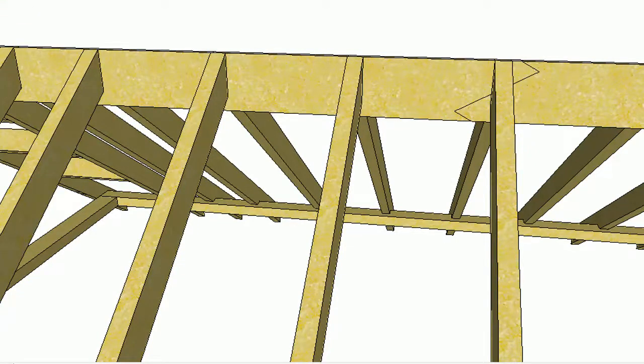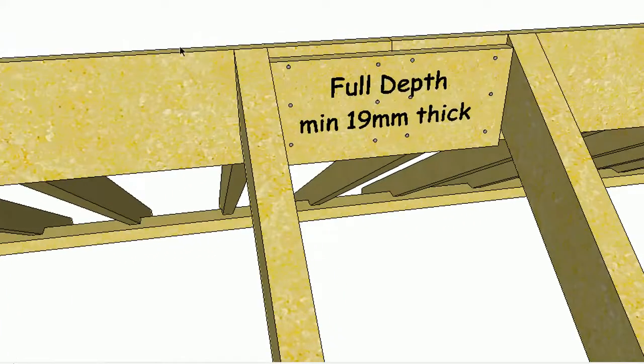The preferred method in the timber framing code is to do what they call a splice. You can see here that they've just butt jointed the two sections of ridge together halfway between a pair of rafters, and then they've used the fish plate.